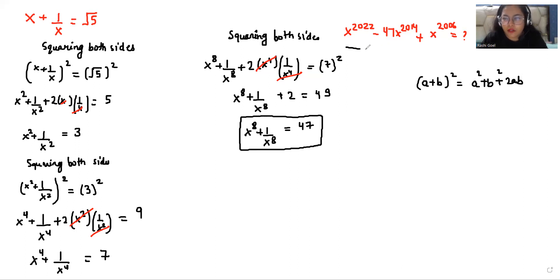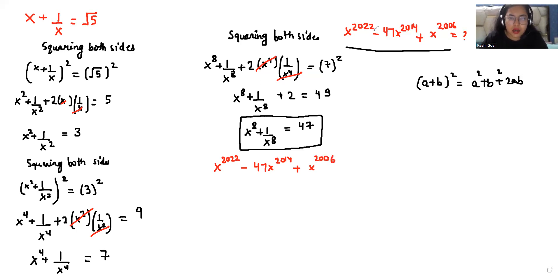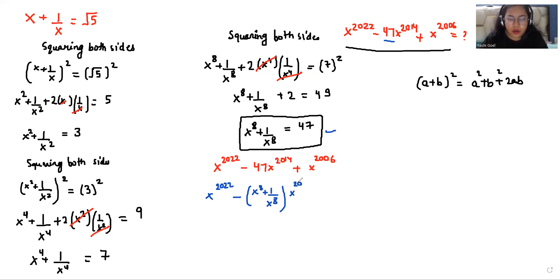Now we have to find the value of the expression x power 2022 minus 47 x power 2014 plus x power 2006. I have the value of 47, that is x power 8 plus 1 over x power 8, so I am going to replace it. So we get x power 2022 minus, in place of 47 we write x power 8 plus 1 over x power 8, times x power 2014, plus x power 2006.